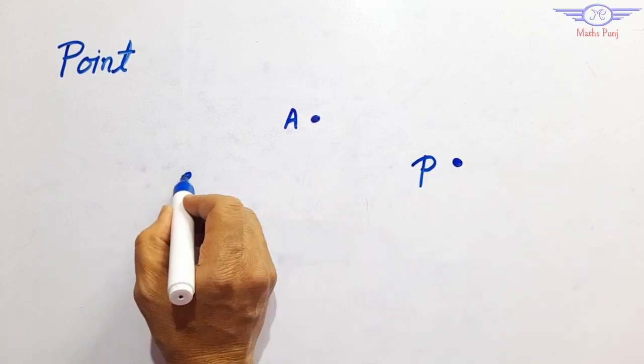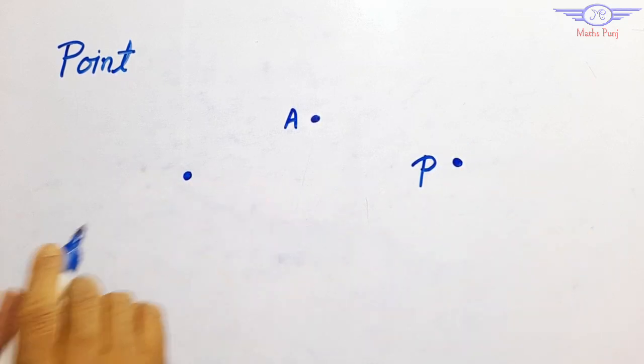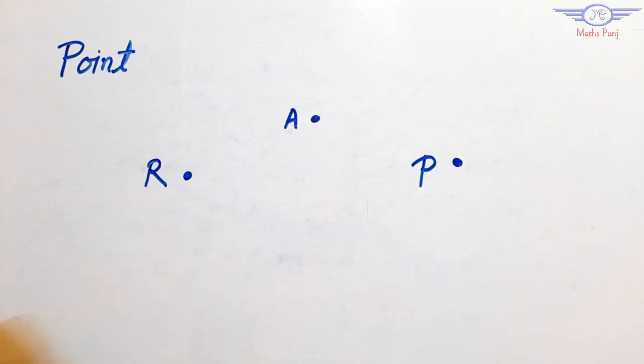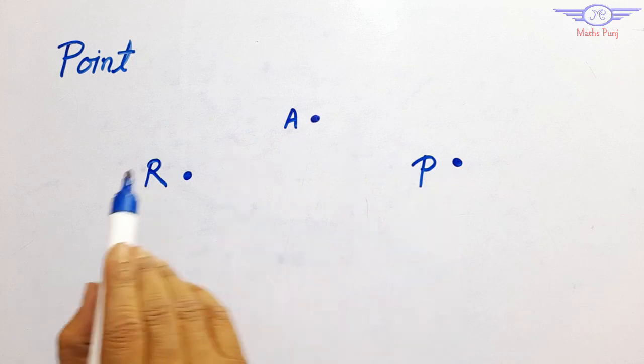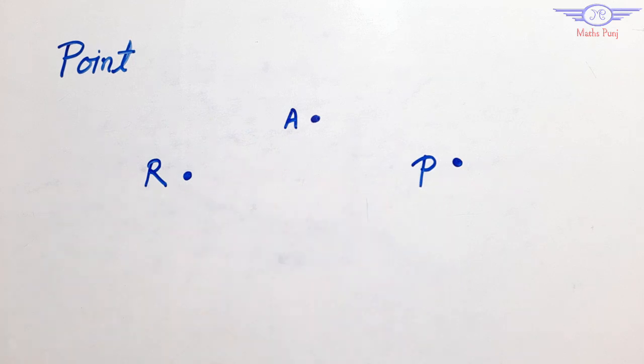If any point is located here you can name it like point P. Maybe a point can be here — you can name it like R. So these are point A, point P, and point R.